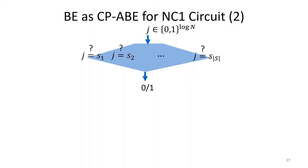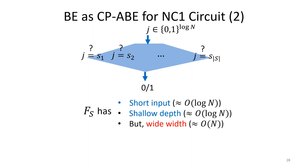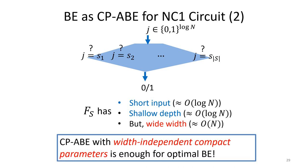To have an efficient construction, we use the following specific circuit to implement F_S. The circuit takes J in binary form and compares it with each index in S in parallel, one by one. If any of them match, it outputs 1, otherwise 0. This circuit has a short input length, which is only logarithmic in N, and its depth is shallow due to parallel computation, also logarithmic. However, it has very wide width. This suggests that if we have a CP-ABE scheme whose parameter size is independent from the width of supported circuits, this implies a broadcast encryption scheme with compact parameter size. In the following, we focus on constructing such a CP-ABE scheme.